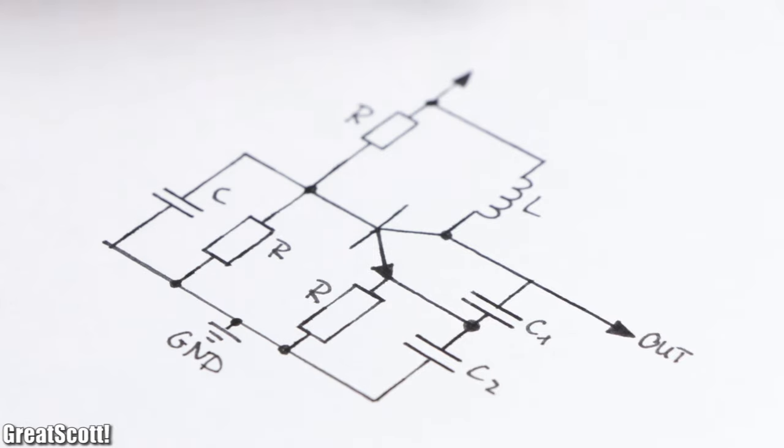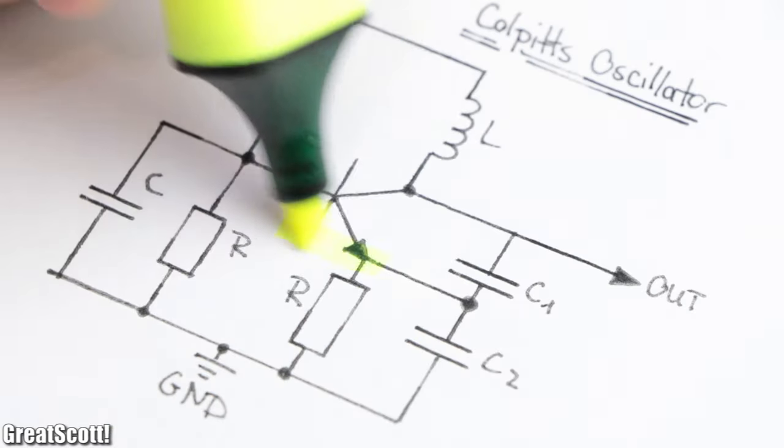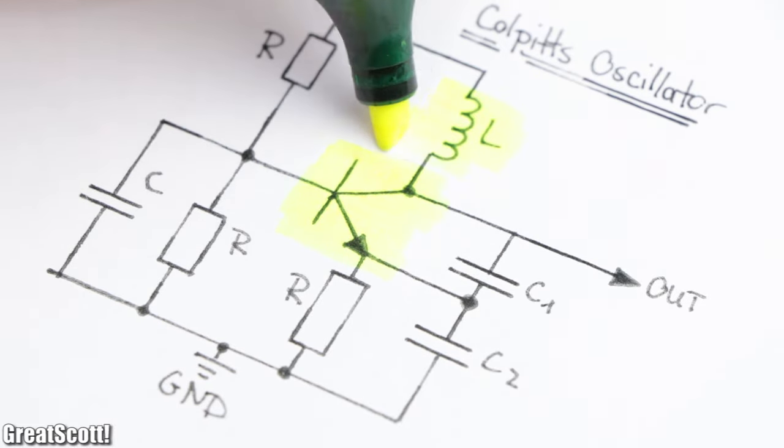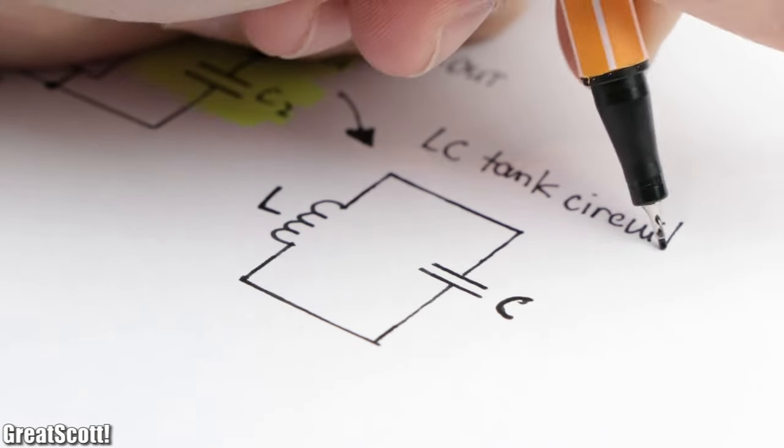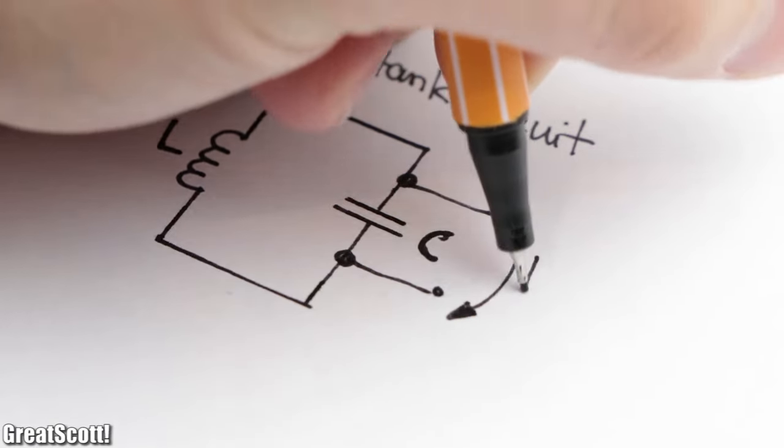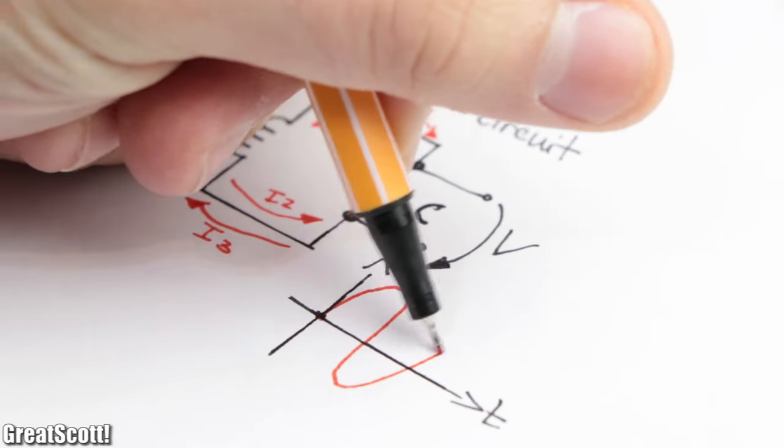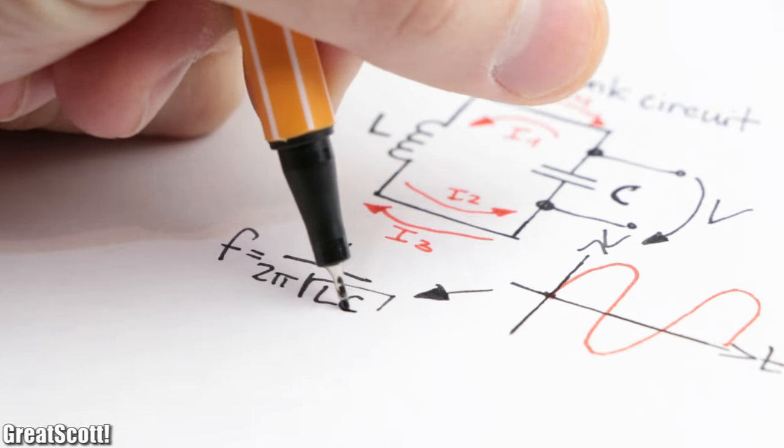Well, a circuit which is often used for this is a so-called Colpitts oscillator, which primarily consists of a bipolar junction transistor, one inductor, and two capacitors which together form an LC tank circuit. If energy would be applied to the tank circuit alone, it would for a short while oscillate between the capacitor and inductor at a resonance frequency according to this formula.